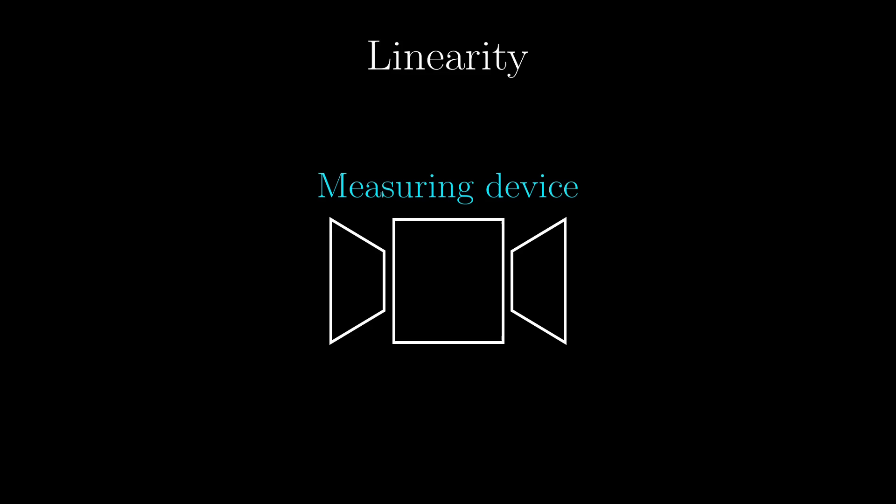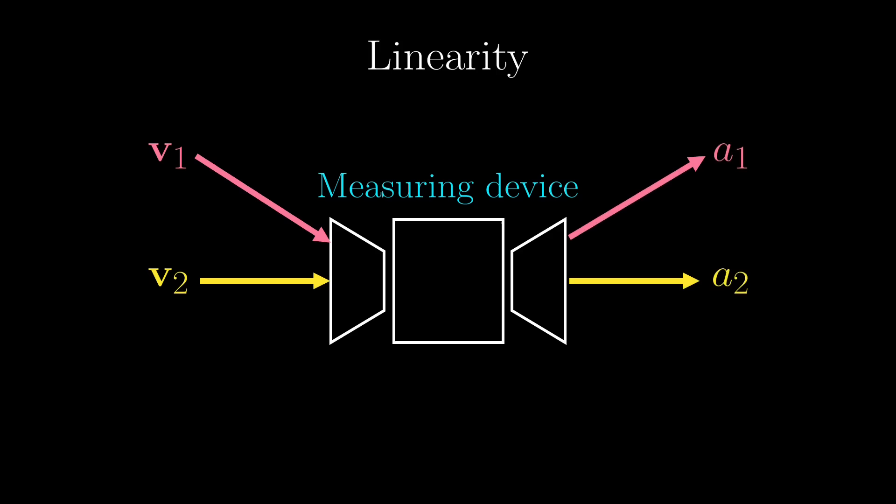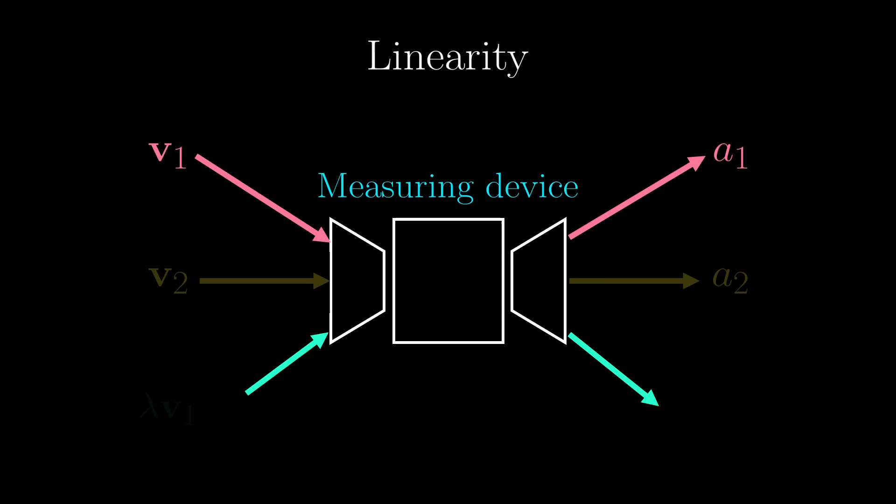That means if you have two vectors v1 and v2, and they are measured by this machine to be a1 and a2 respectively, then this machine will measure v1 plus v2 to be a1 plus a2. And if you instead scale the vector v1 by a number lambda, then it will be measured to be lambda times a1.